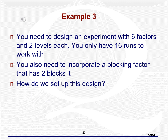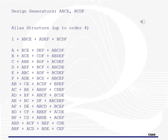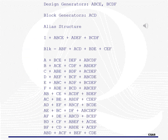Let's try an example: a design with six factors and 16 runs, created in two blocks. We first create the fractionalization alias structure using generators ABCE and BCDF. Notice that ABCE and BCDF have the same number of letters. We also have two chains that do not include main effects or two-way interactions, and we will choose one of them to confound with the blocks — we choose the ABF chain. Here is the overall alias structure for the entire design; the blocks are confounded only with higher-order interactions.